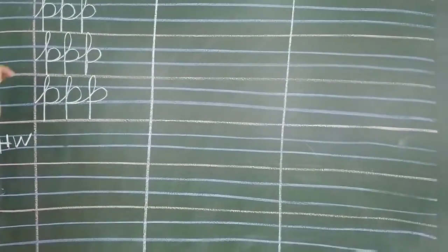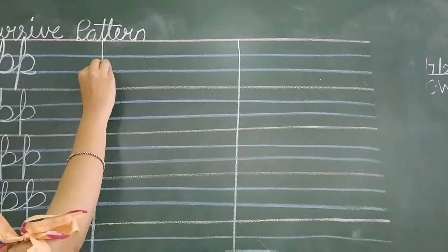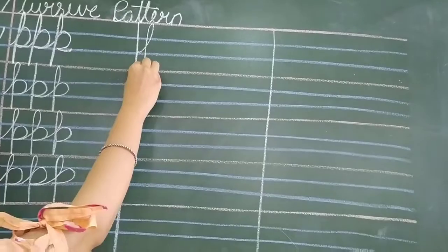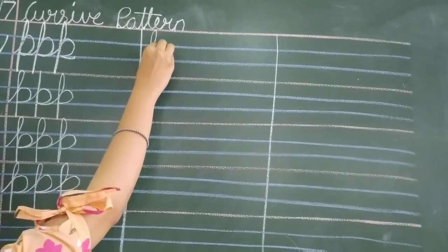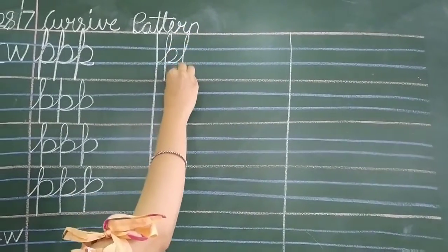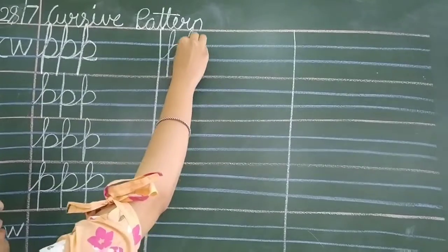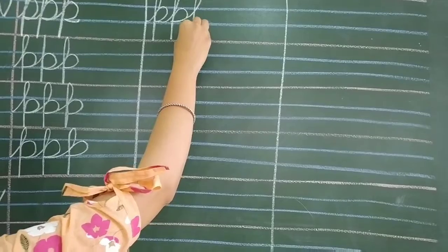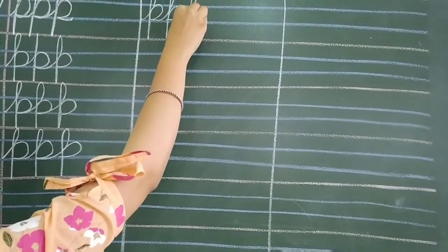Now, we will write here. Touching the margin, second blue line, adding a loop and a loop and a P. This way. Do not leave your hands and you will write it continuously three times.